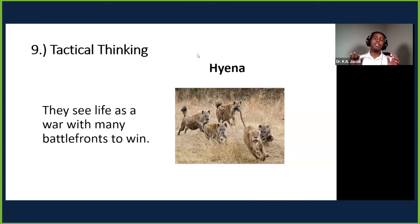Number nine: tactical thinking, using the hyena. Tactical thinkers see life as a war with many battlefronts to win. They see every single thing as a challenge, but in every challenge there is an opportunity. Hyenas can introduce themselves to KCB Bank as suppliers, go to government offices saying 'I can supply anything'—phones, computers, building materials, roads—they have various battlefronts.